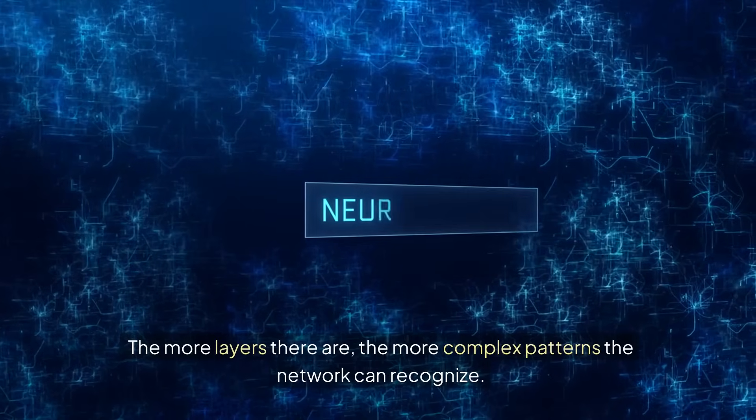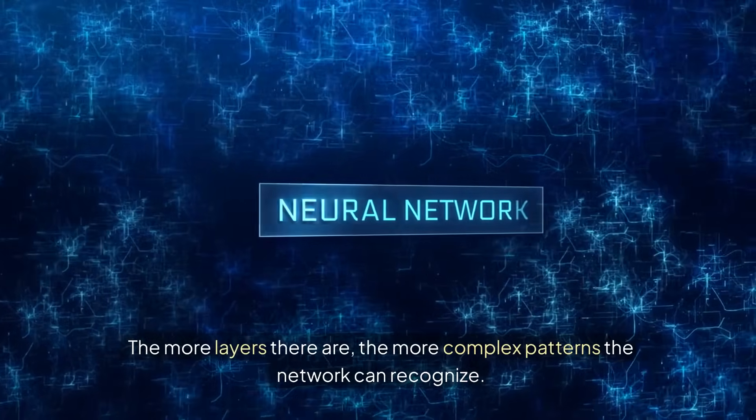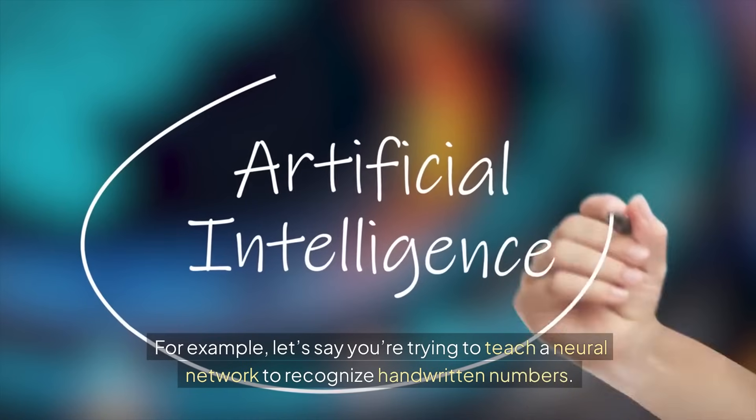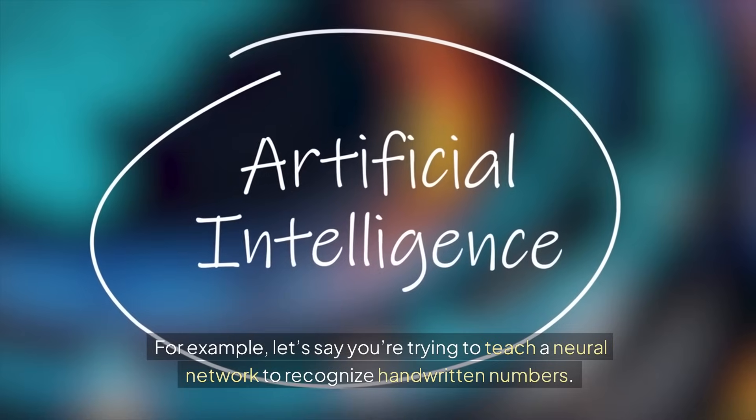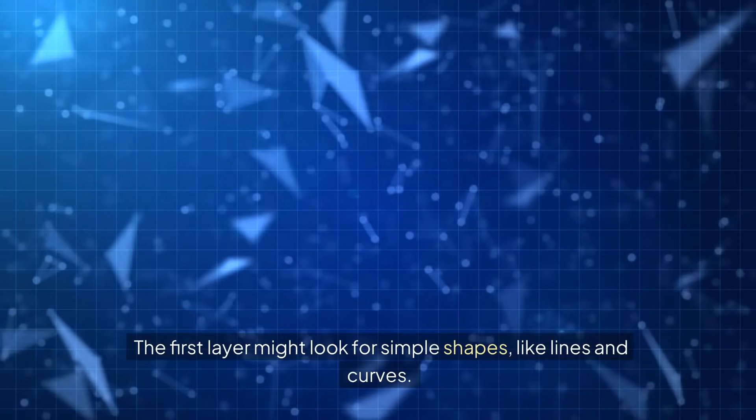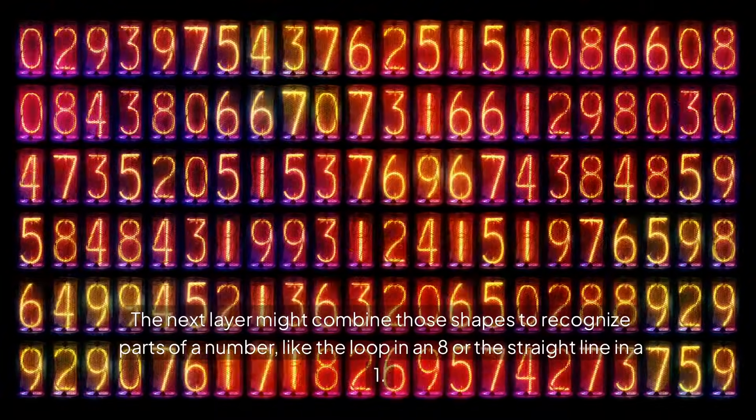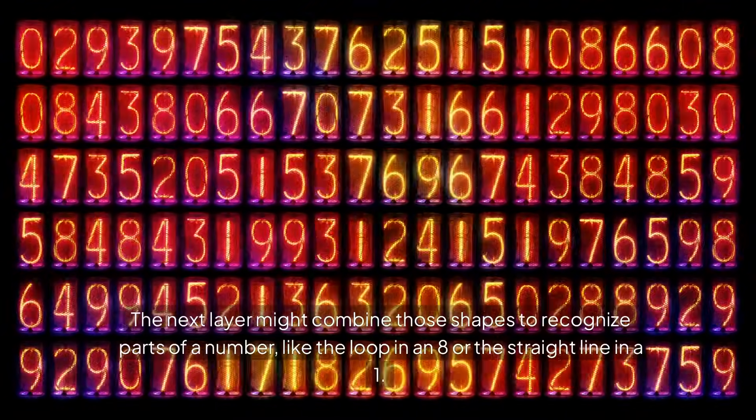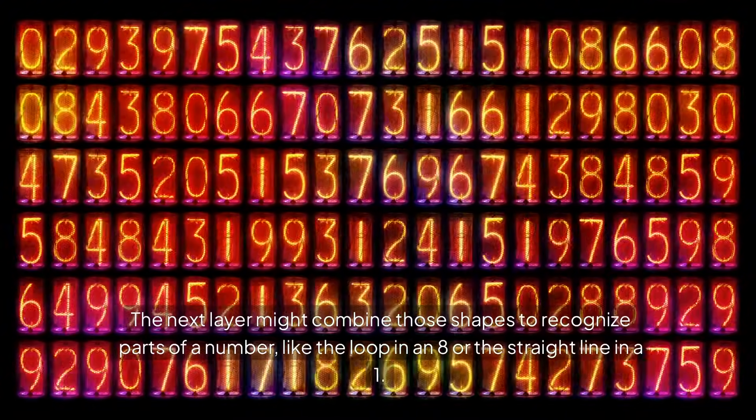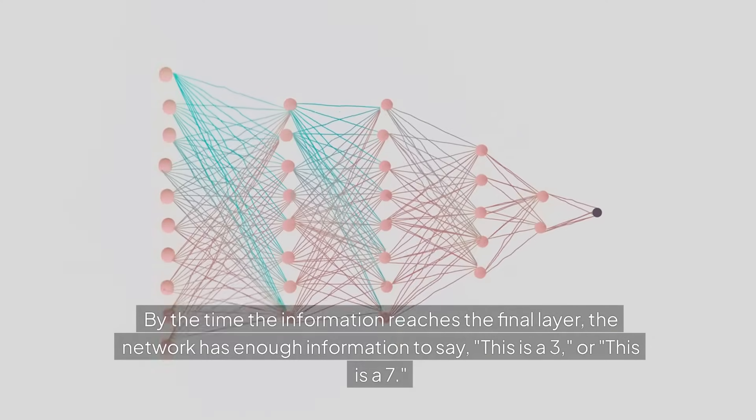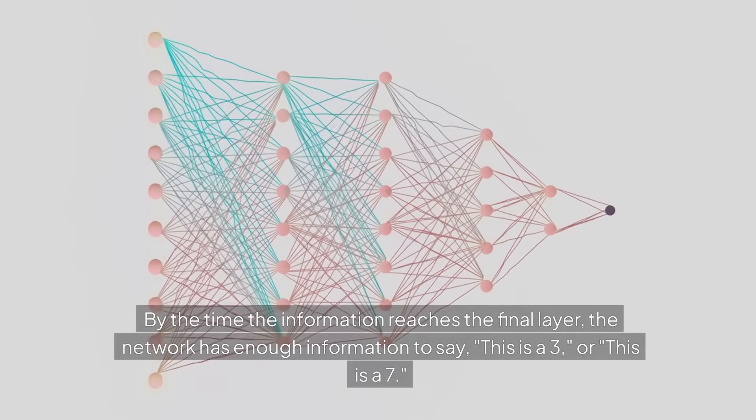For example, let's say you're trying to teach a neural network to recognize handwritten numbers. The first layer might look for simple shapes like lines and curves. The next layer might combine those shapes to recognize parts of a number, like the loop in an eight or the straight line in a one. By the time the information reaches the final layer, the network has enough information to say this is a three or this is a seven.